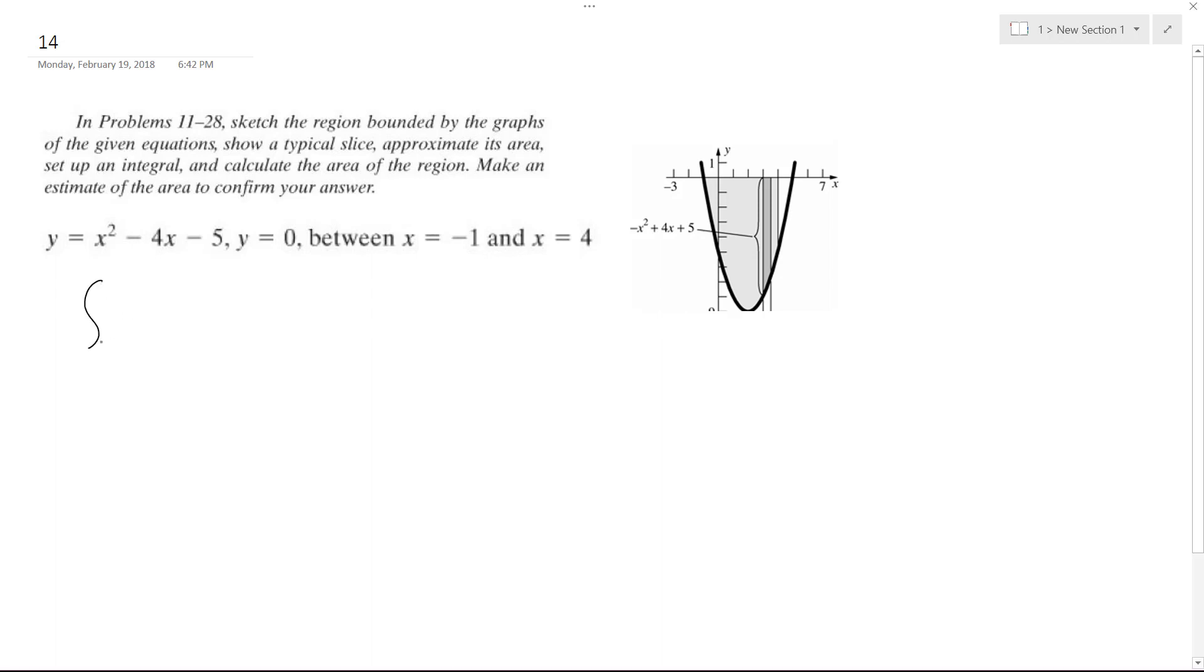So we're going to integrate x squared minus 4x minus 5 and it's going to be between negative 1 and 4. And actually the first thing I'm going to do is distribute a negative because it's underneath y.